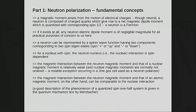Neutrons are fermions — spin one-half — and they have a magnetic moment. This has significant consequences for the wave function and its scattering interactions with materials. For everything discussed previously, if we don't have magnetic materials and the neutrons aren't polarized, we don't have to worry about it. But if we start studying magnetic materials, it becomes an issue.